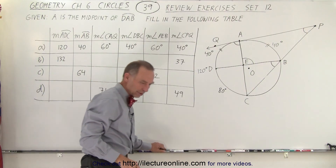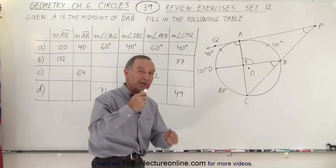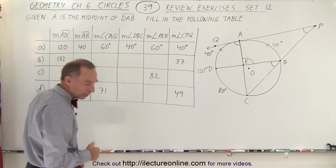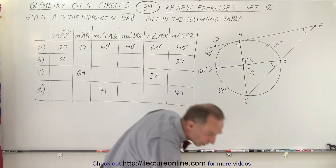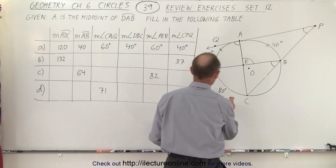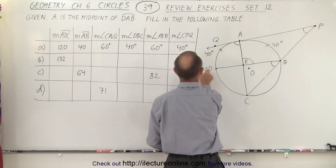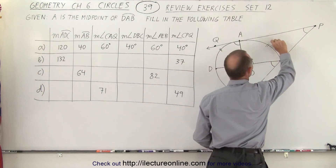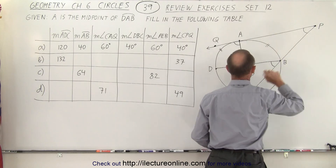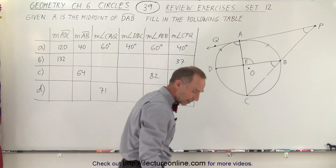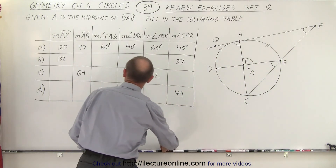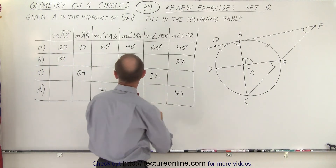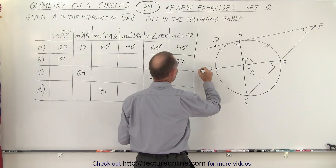Let's go on to part B and change the color of the pen. For the second set they give us that the measure from A to D to C — ADC — is 132 degrees. That's all the way from A to C.